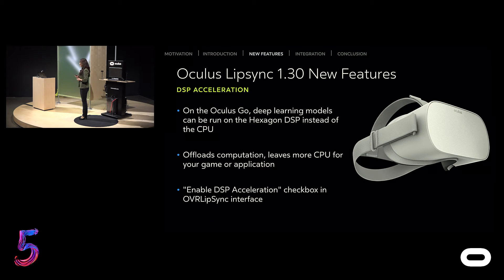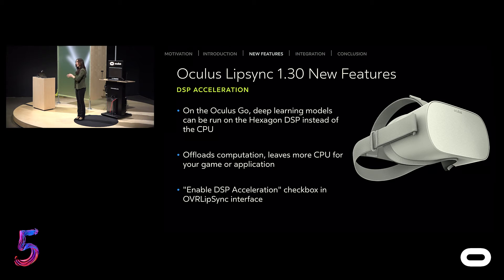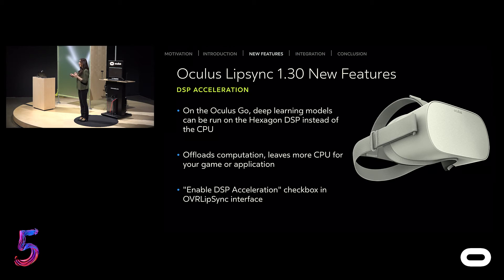With the 1.30 release, we are also giving you DSP acceleration. Where applicable, you can offload computation of the deep learning models to DSP on the supported platforms — it will run on the Hexagon DSP of Qualcomm instead of the CPU. That will give you more cycles on your CPU so you can have more cycles for your application or your games. To use this feature, click the 'Enable DSP Acceleration' checkbox in your interface.